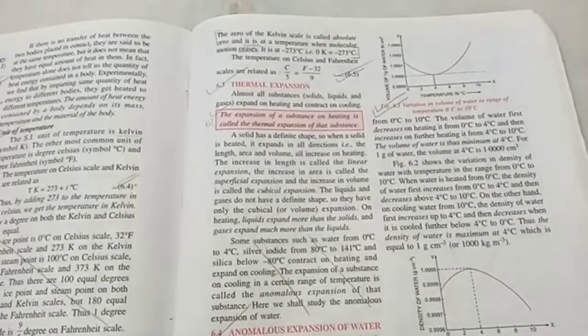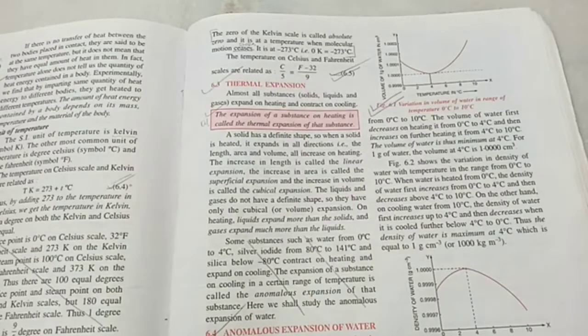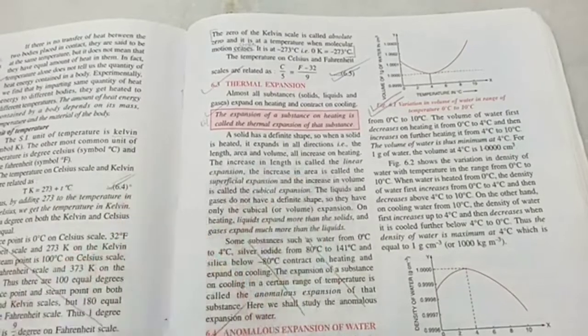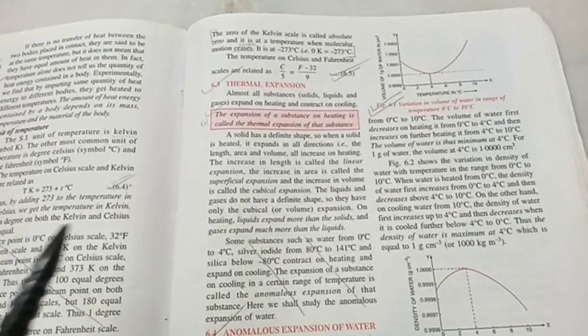Now, let's talk about thermal expansion. We know that whenever we heat something, the substance expands. If it's a thin wire, then only its length will increase, so that is called linear expansion. If it's a thin sheet, then only its area will increase, that is, length and breadth, two-dimensional, so that is called superficial expansion.